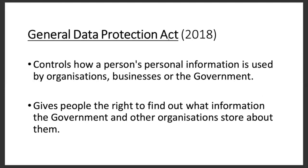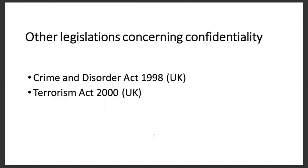The General Data Protection Act 2018 controls how a person's personal information is used by organisations, businesses, or the government, and gives people the right to find out what information is stored about them. Other legislations concerning confidentiality include the Crime and Disorder Act 1998 and the Terrorism Act 2000. In both cases, if a police officer comes into the hospital, that doesn't mean you just hand over all information — you must get the right documents and follow the right processes and procedures. Only if the police present you with the right documents should you hand over the information. That is the end of the lesson. Thank you for tuning in.